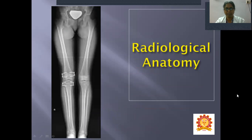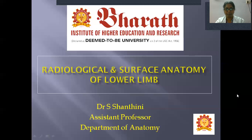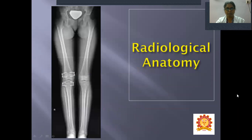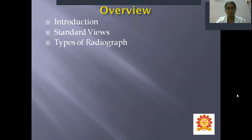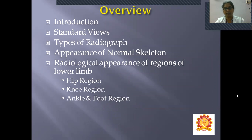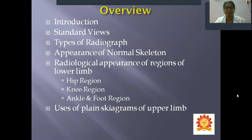First we will see about the Radiological Anatomy. Overview of today's class: introduction about the Radiological and Surface Anatomy, standard views taken in the radiograph and types of radiograph, appearance of a normal skeleton and radiological appearance of regions of the lower limb — the three regions being hip region, knee region, and ankle and foot region. Finally we conclude with the uses of the plain X-ray of the lower limb.